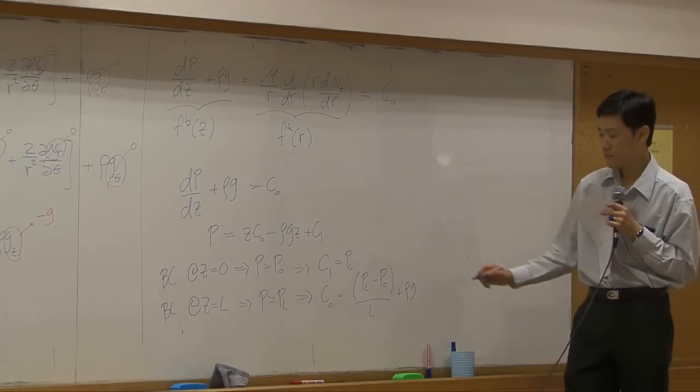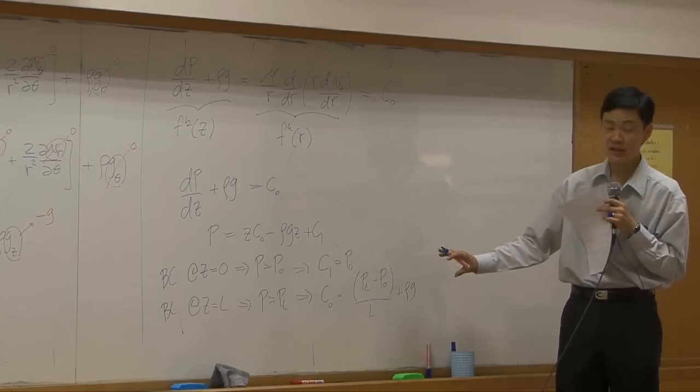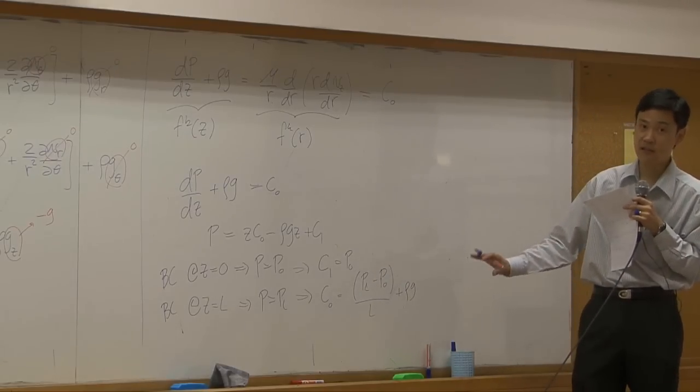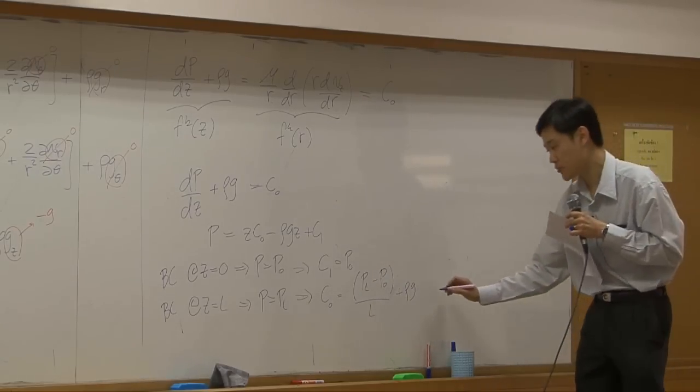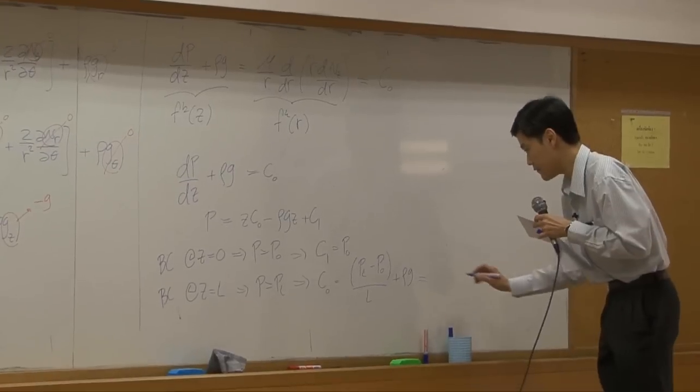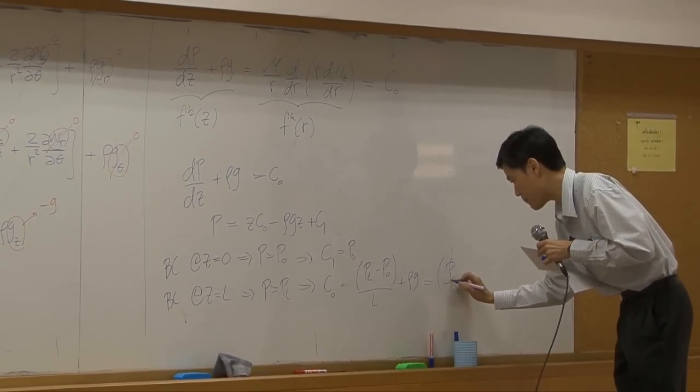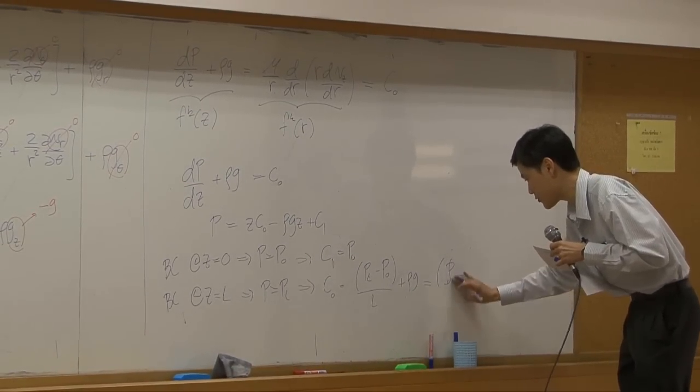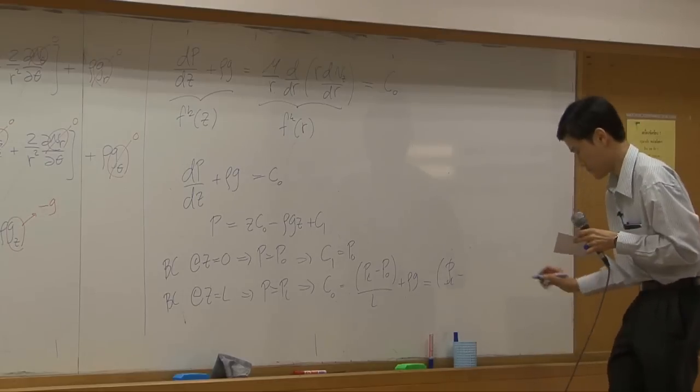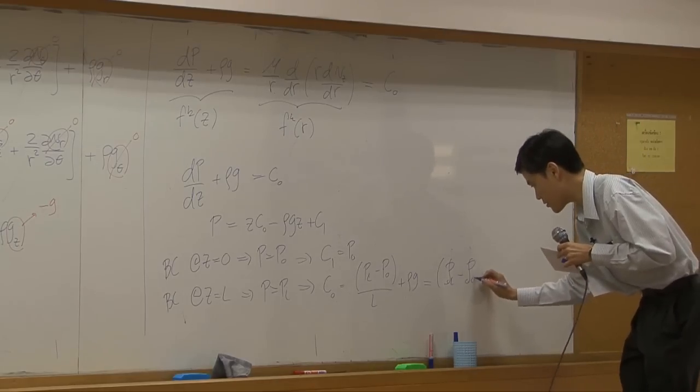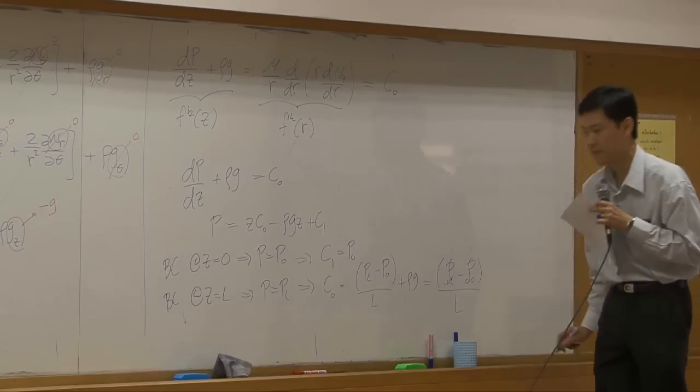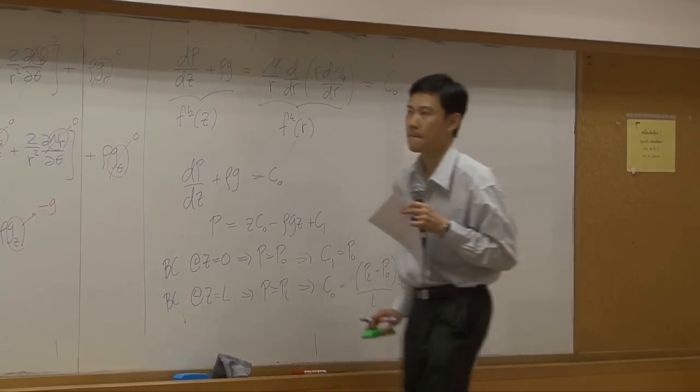And again, we can split them, change them into modified pressure just like what we did in an example from chapter 2. That would give you modified pressure, PL minus modified pressure P0 divided by L. So that's a constant.